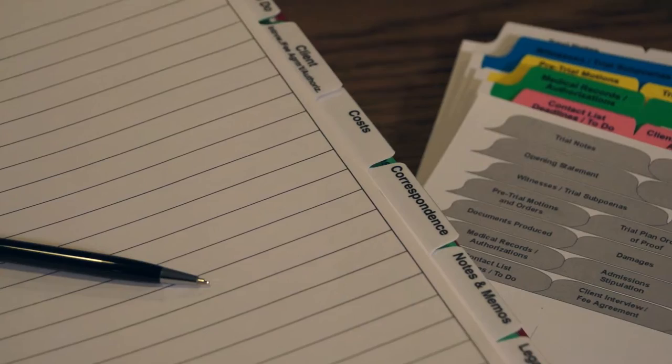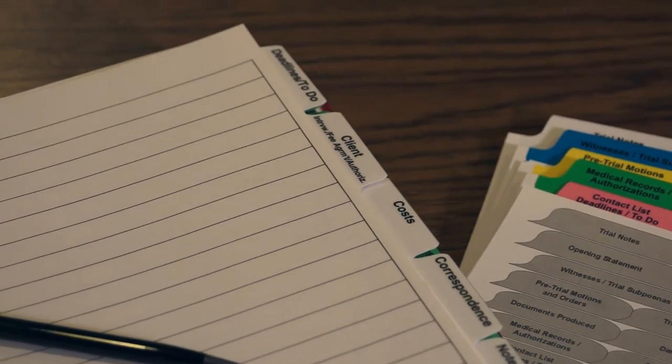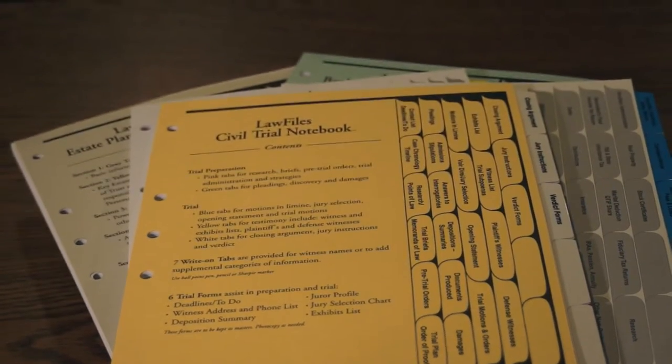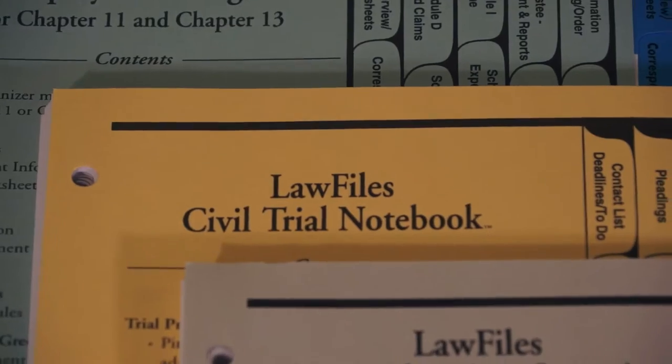We also offer over 20 pre-labeled index tabs based on specific legal segments, and our litigation tab set organizer includes 38 pre-labeled tab headings for Ultimate Organization.